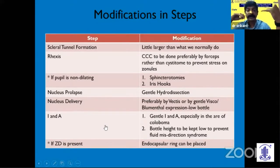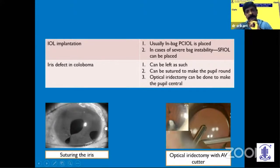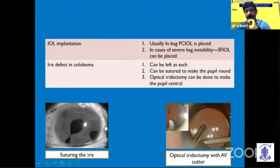Endocapsular tension ring should be on hand if the zonular dialysis is more than necessary. Put the IOL in the bag with the haptics in the area of the zonular instability. If it is unstable, make it sulcus-fixated. SFI IOL is also another option. If there is an iris defect, in most cases we leave it as such because the eye adjusts itself to that visual axis. But to make it round, we can suture it, and the operative approach can be adjusted to make the iris more coherent with the corneal or visual axis.